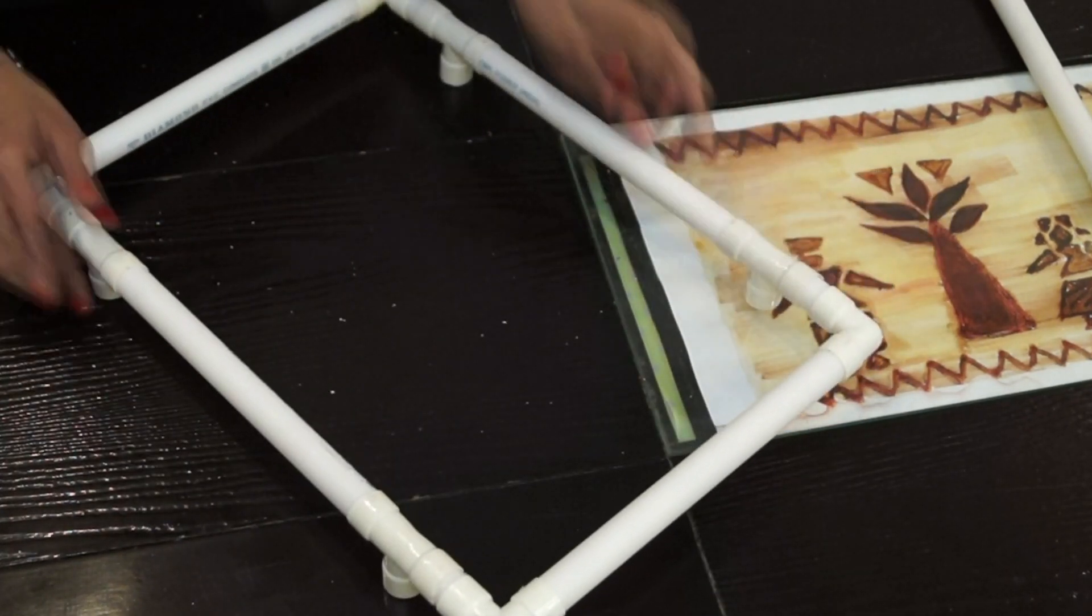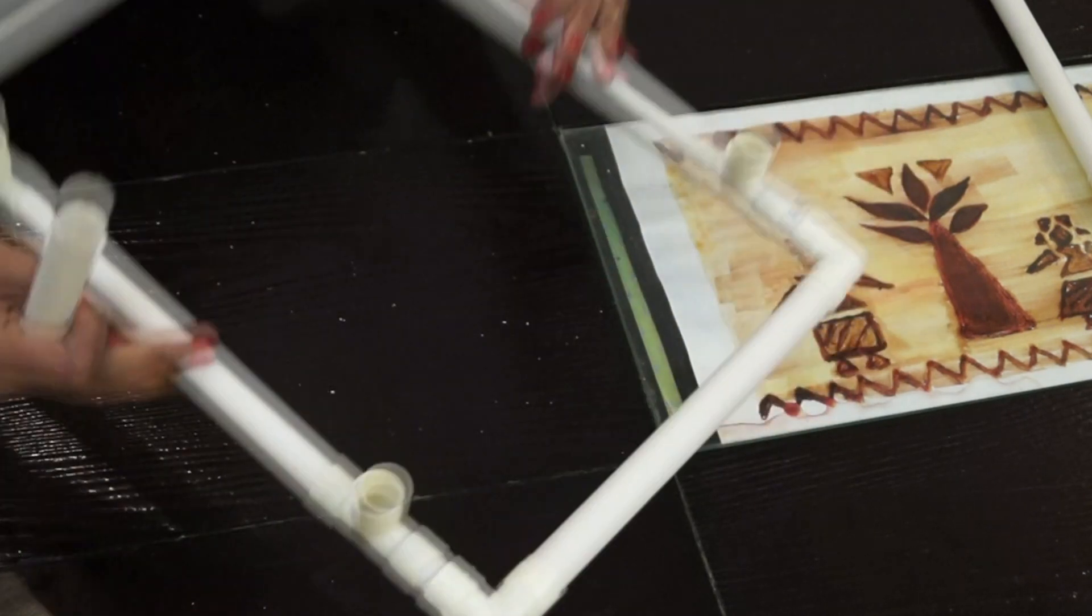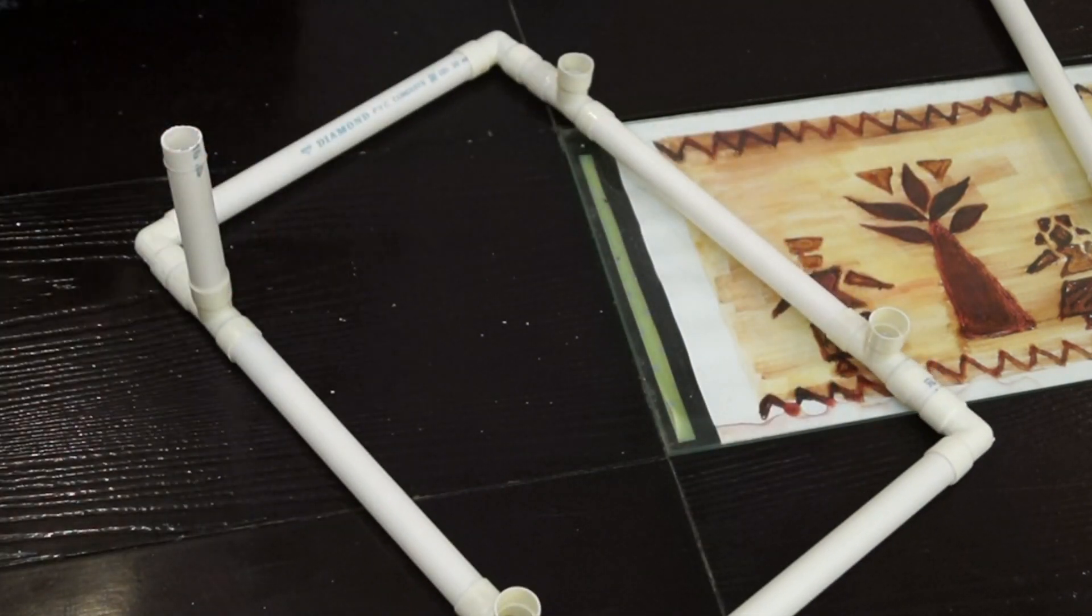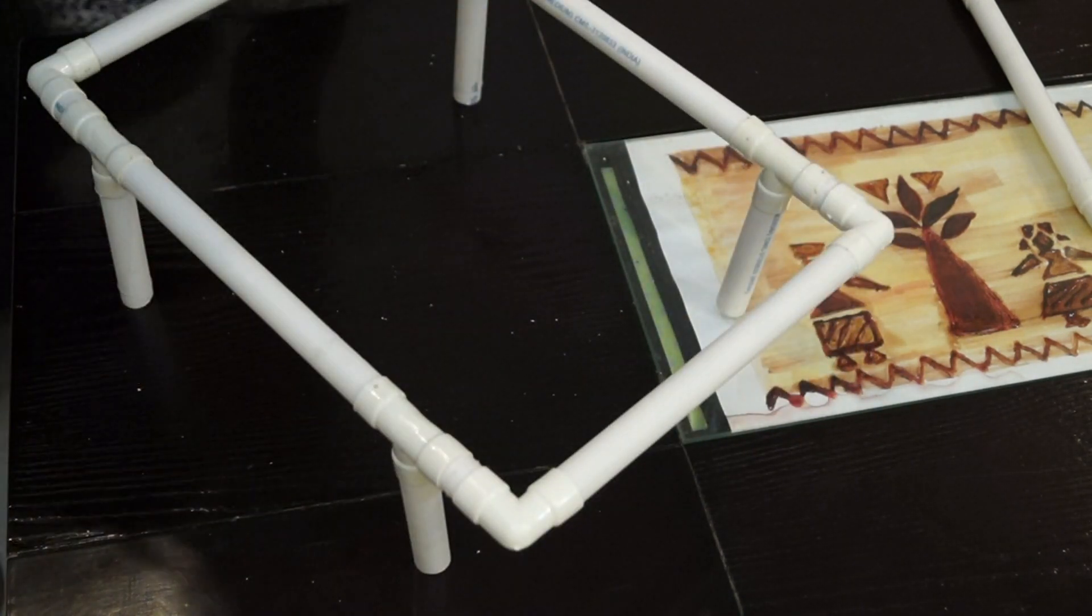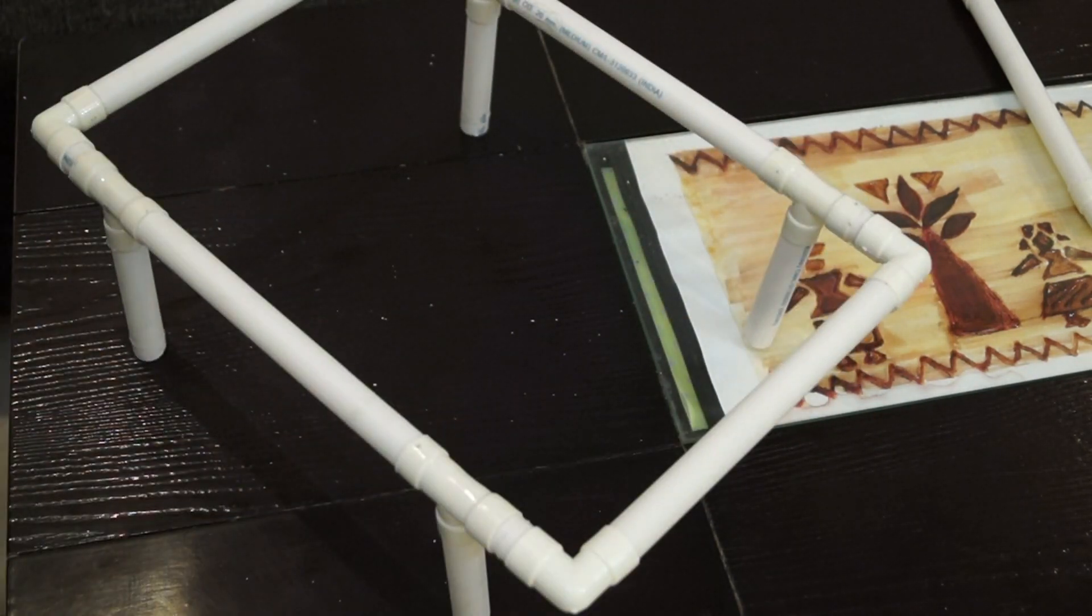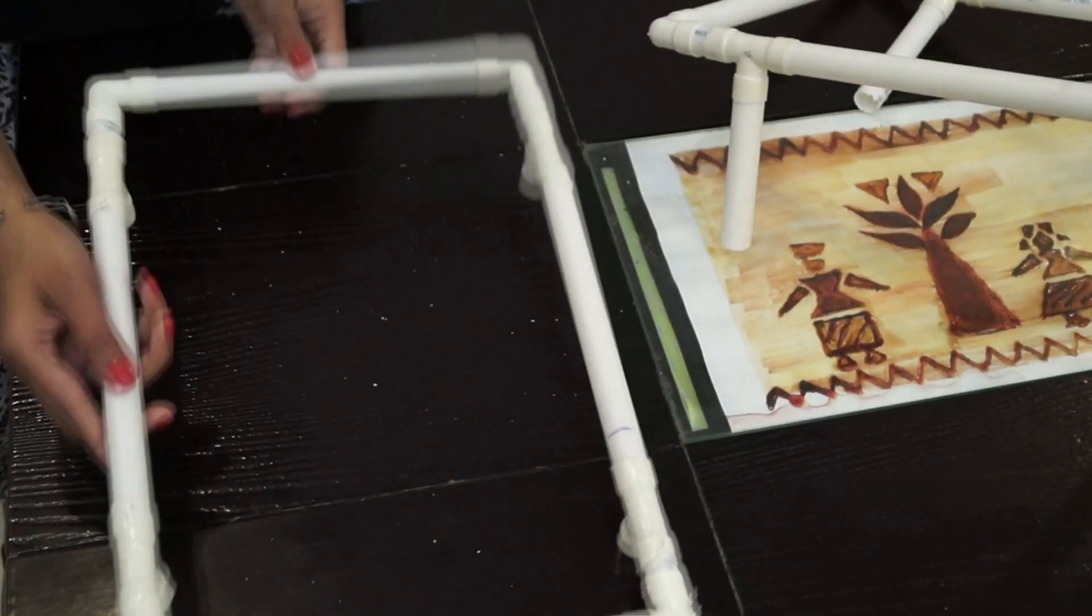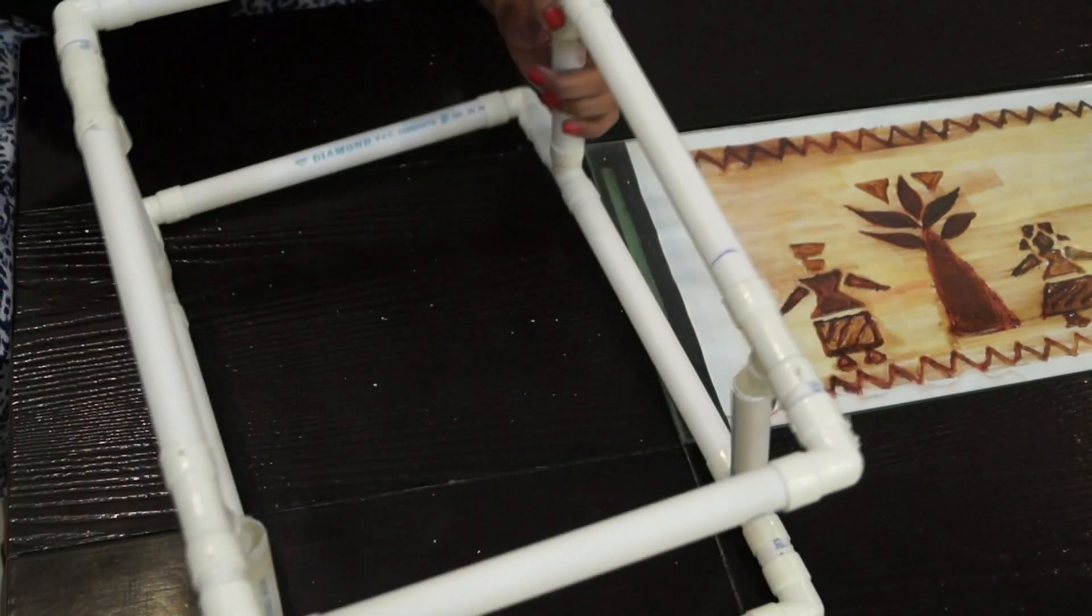So next we are going to put a 4 inch PVC pipe at the T-joint to make legs of the table. So as you can see, it's not that sturdy. You cannot put a lot of weight on it. That is why I made another same frame which I had shown you earlier.